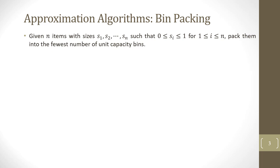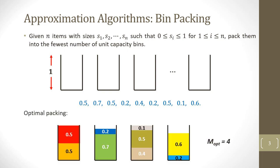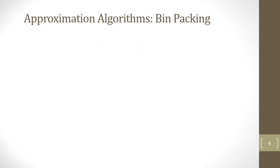What is a bin packing problem? Given n items with sizes s1 to sn such that the size of each item is less than 1, pack them into the fewest number of unit capacity bins. For example, we have 9 items with different sizes. The optimal packing for these 9 items is 4 bins, but there does not exist an algorithm that can find the optimal solution to the bin packing problem in polynomial time.